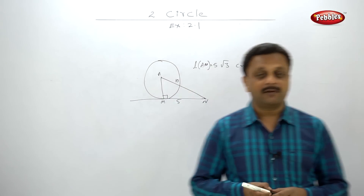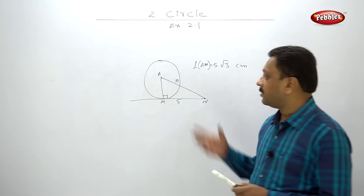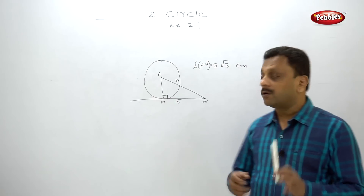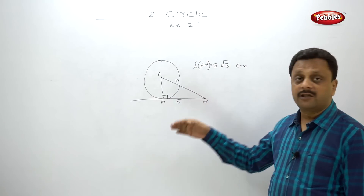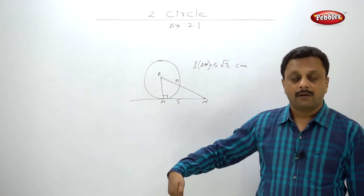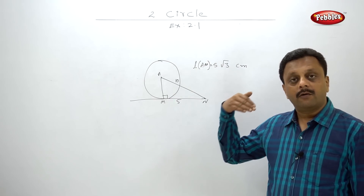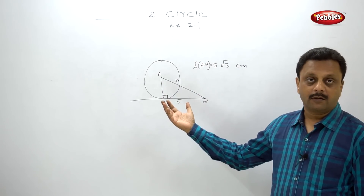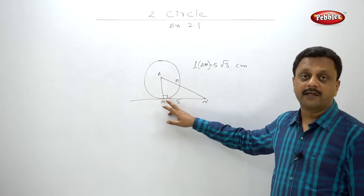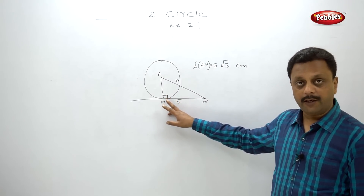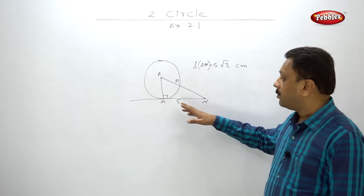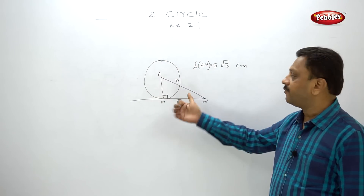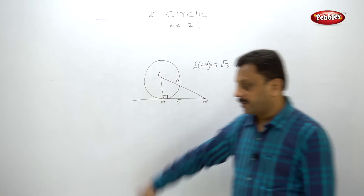Very simple example. We did not learn Pythagoras theorem in this chapter — we are making use of our past knowledge. What we learned here is that this angle is 90 degrees, that's all we learned in this chapter. So we analyzed this figure and found out the answer.